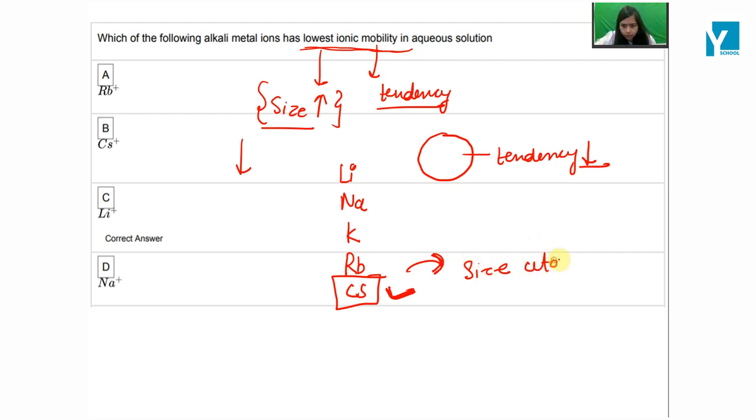Atomic size increases. So if we asked the lowest, I think there is a correction here. Because if we asked the lowest, top to bottom mobility decreases. So what is the lowest? The largest item here was the largest. Lithium is the smallest size, that's why the largest lithium is the largest.